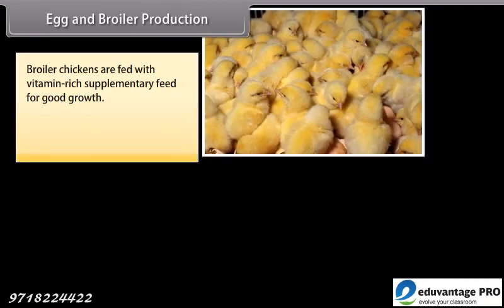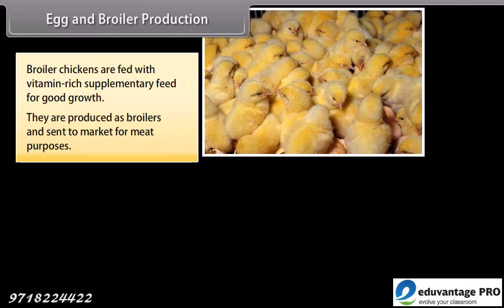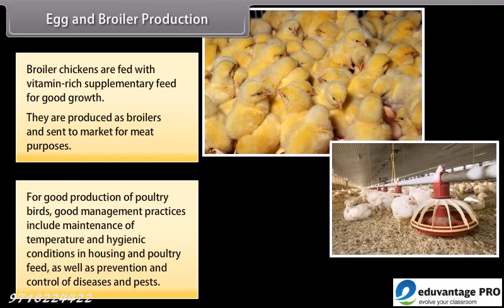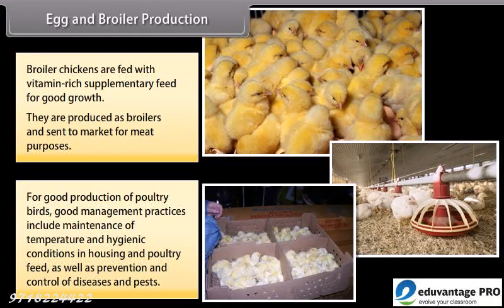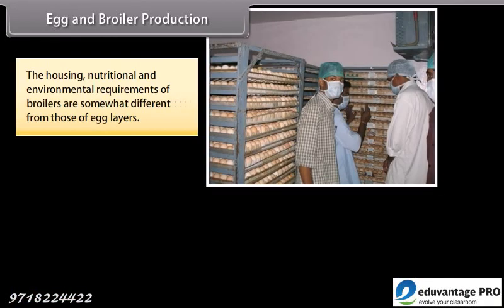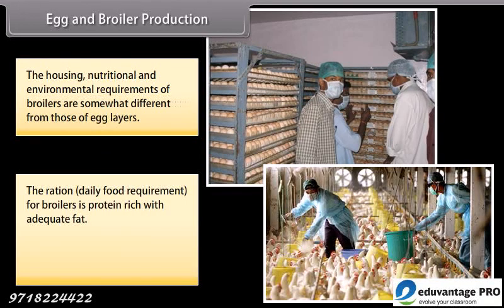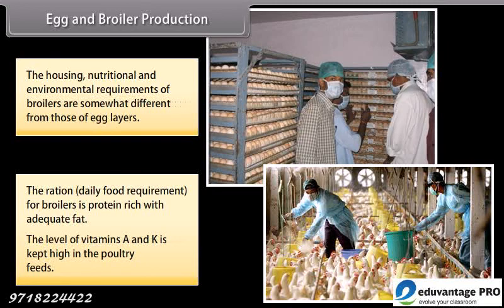Egg and broiler production. Broiler chickens are fed with vitamin-rich supplementary feed for good growth. They are produced as broilers and sent to market for meat purposes. For good production of poultry birds, good management practices include maintenance of temperature and hygienic conditions in housing and poultry feed, as well as prevention and control of diseases and pests. The housing, nutritional and environmental requirements of broilers are somewhat different from those of egg-layers. The daily ration for broilers is protein-rich with adequate fat, and the levels of vitamins A and K are kept high in the poultry feeds.